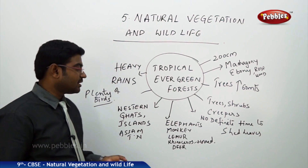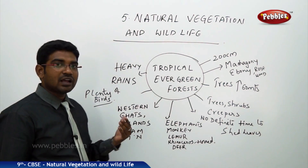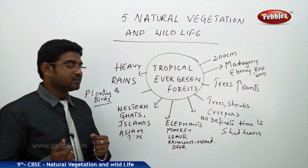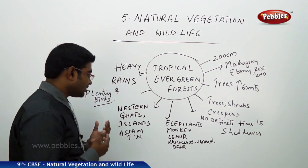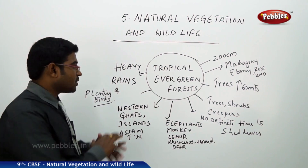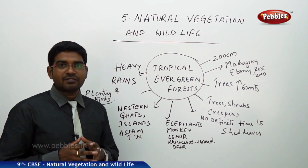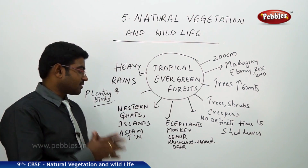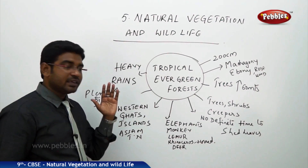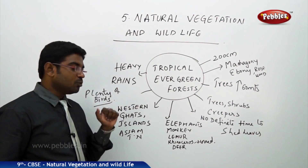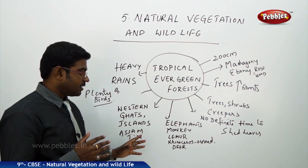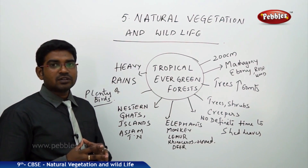This forest is present in the Western Ghats of India, all the islands like Andaman and Lakshadweep, and also in states like Assam and Tamil Nadu. Animals like elephants, monkeys, lemur, horned rhinoceros, and deer are also found here.